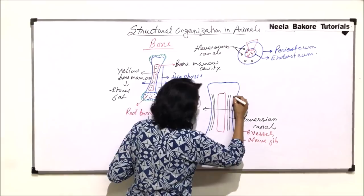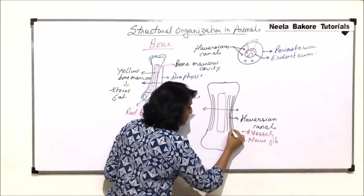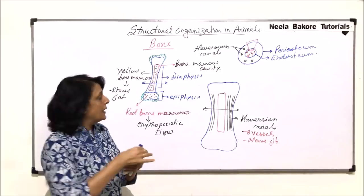These Haversian canals, let me make one more Haversian canal here. These Haversian canals are connected with each other, and these connections are oblique connections.